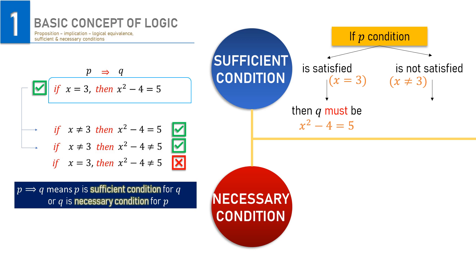The second indication is, with false P, Q may still be true. Look at the second statement. Even if x is not 3, x squared minus 4 may still be equal to 5. We know if x equals minus 3, it gives us x squared minus 4 equals 5.